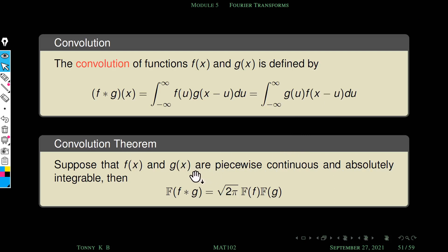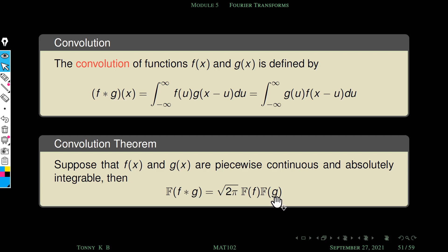Next we define the convolution theorem for Fourier transform. Suppose f(x) and g(x) are piecewise continuous and absolutely integrable. Then the Fourier transform of f star g equals root 2 pi times the Fourier transform of f multiplied by the Fourier transform of g. So we find the Fourier transform of f, then of g, take their product and multiply by root 2 pi.